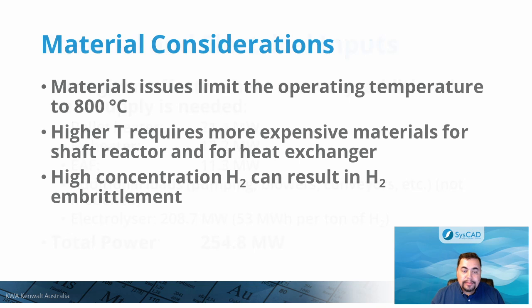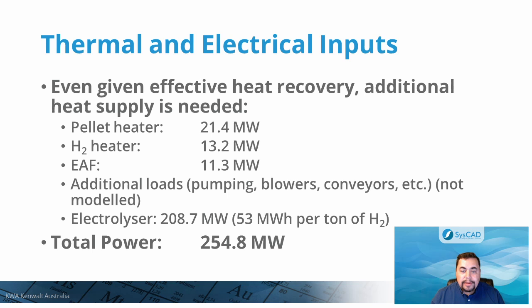Thermal and electrical inputs resulting from our simulation are listed here. Even if we consider effective heat recovery, additional heat supply is needed to preheat the feed and increase input temperatures for hydrogen to the shaft furnace. Energy is required for melting the hot feed into the electric arc furnace. However, the main external energy consumption is for the electrolyzer producing hydrogen. If we consider a requirement of 53 megawatt-hours per ton of hydrogen, we then need a total of 208 megawatts for this case, giving an overall power requirement in the order of 255 megawatts for 100 tons per hour of ore.